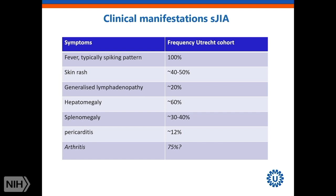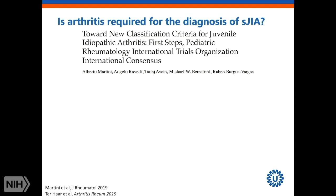These are clinical manifestations in our cohort over the past 11–12 years. All patients present with a really striking fever pattern — almost always spiking, although not always. Slightly less than half present with skin manifestations that can vary — sometimes maculopapular, but also sometimes really subtle. About one-fifth show generalized lymphadenopathy. A little more show increased size of the spleen or liver. About one in eight patients have signs of pericarditis on ultrasound or chest X-ray. Importantly, not all of those patients have arthritis, at least not at disease onset.